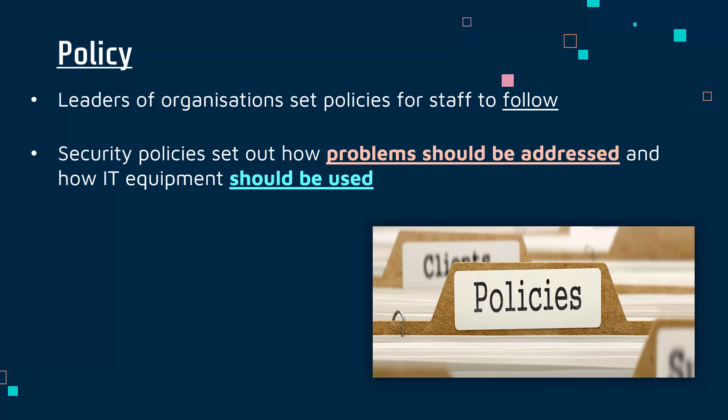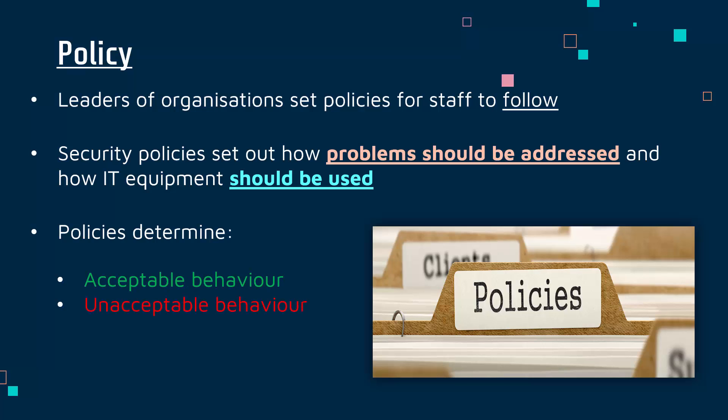For example, somebody could damage a computer and that would be covered by a policy, but it's not necessarily related to security. To be more general, policies need to both define what is acceptable and also unacceptable behaviour. If a policy is not clear on what you should be doing or equally what you shouldn't be doing, how are staff meant to follow and adhere to it? It's very hard to enforce a policy unless you've got clear definitions of what is allowed and what isn't allowed.